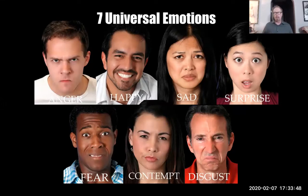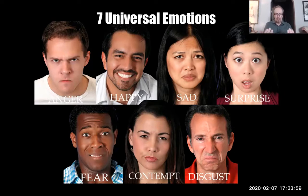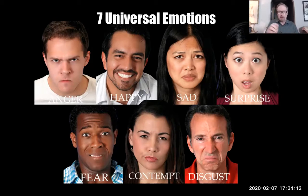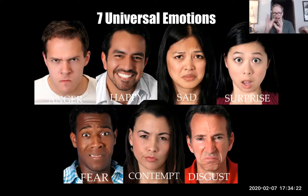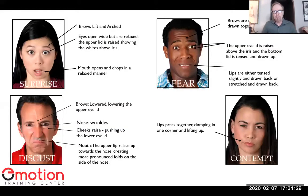Here's what the science knows: there are specific emotions that are universal — seven of them: anger, happy, sad, surprise, fear, contempt, and disgust. Based on leading research by Dr. Paul Ekman, these emotions are recognizable anywhere on the planet. When you look at them, you probably recognize all of them, but you might also say they look really big — and yes, because these are what are called macro expressions, where there's no reason to hide what you're feeling.